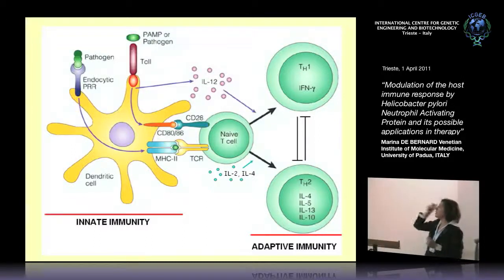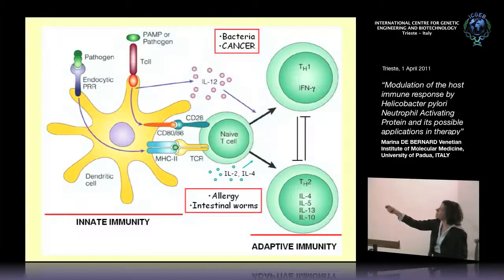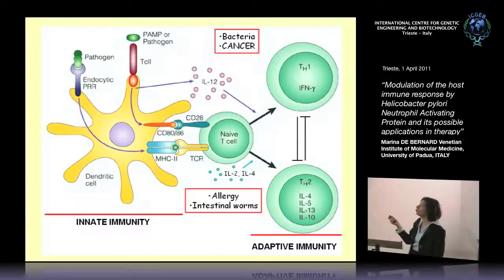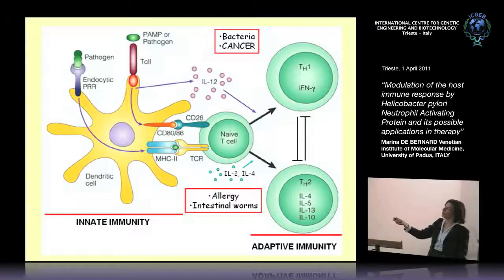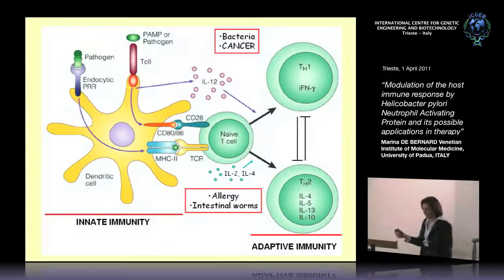Th1 cells produce interferon gamma, which is the hallmark of this subset, and these cells are crucial in the clearance of bacteria, especially intracellular bacteria, but also for killing cancer cells through their contribution to the activity of CD8 T cells. Th2 cells, whose differentiation does not require interleukin-12, are involved in different physiological or pathological conditions such as allergy and intestinal worm clearance.